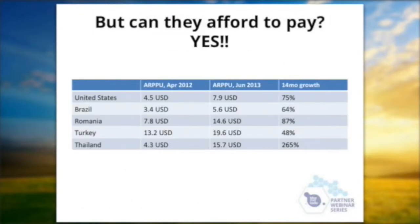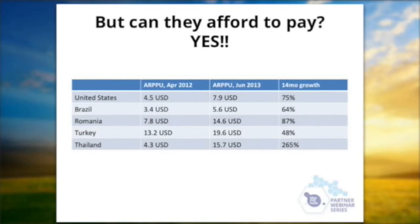The biggest question we always get about emerging markets is that they have a reputation for not paying for content, that they are addicted to free content. But the data we collect — this is our proprietary data, not from any third-party service, this is what runs through our servers every day — shows that in certain emerging markets the average revenue per paying user is actually much higher than in the U.S. In the U.S., the average revenue back in June was almost eight dollars, versus in countries like Romania, Turkey, and Thailand it was two times higher.